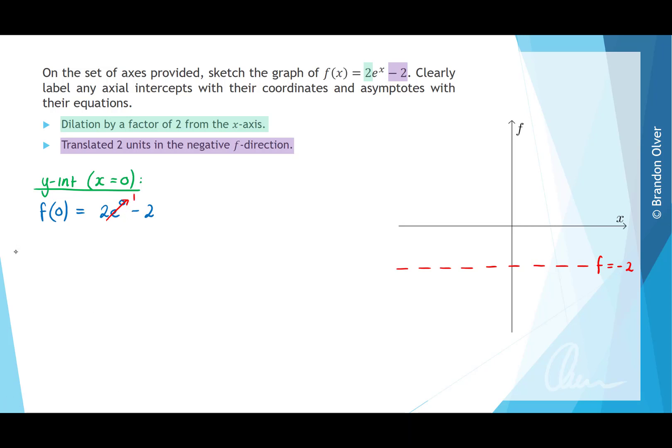Therefore, f(0) = 2 × 1, which is 2 - 2 = 0. So because that coordinate comes out to be (0, 0), it means that it is also the x-intercept.